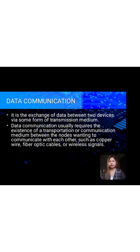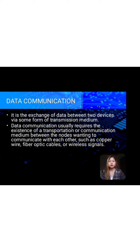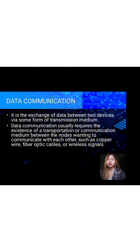What is data communication? It is the exchange of data between two devices via some form of transmission medium. Data communication usually requires the existence of a transportation or communication medium between the nodes to communicate with each other, such as copper wire, fiber optic cables, or wireless signals. Data communication incorporates several techniques and technologies to enable any form of electronic communication.